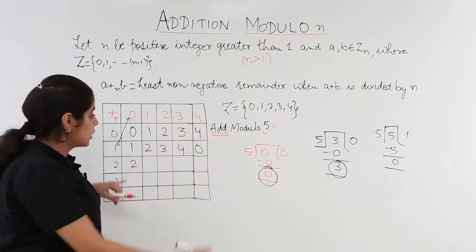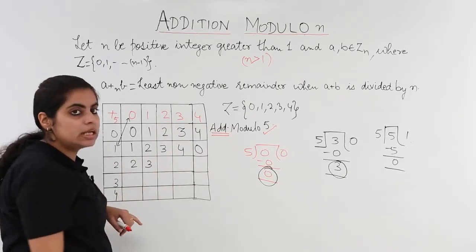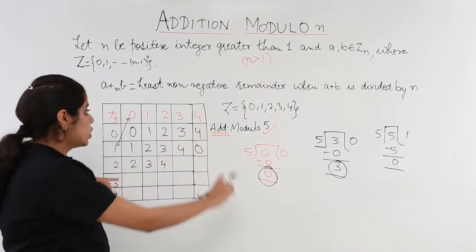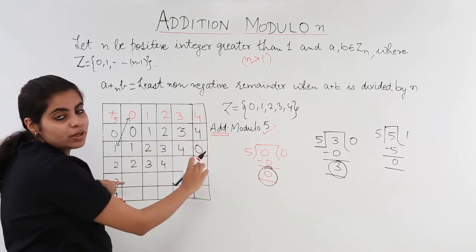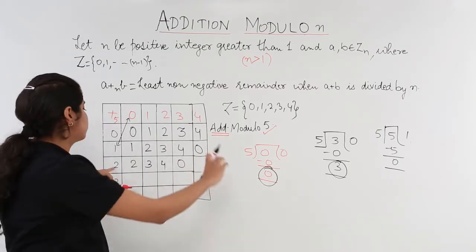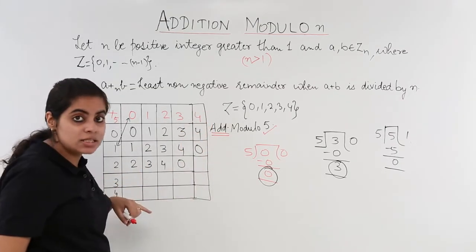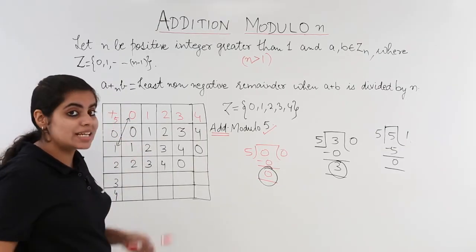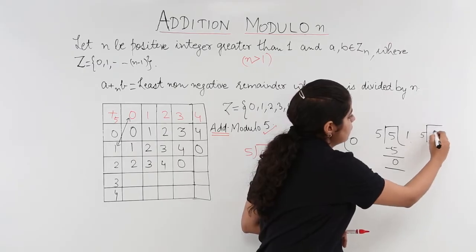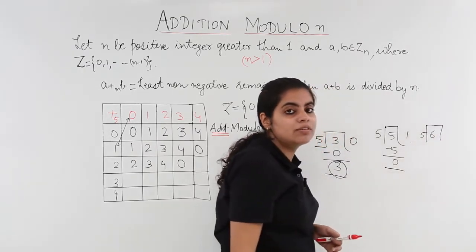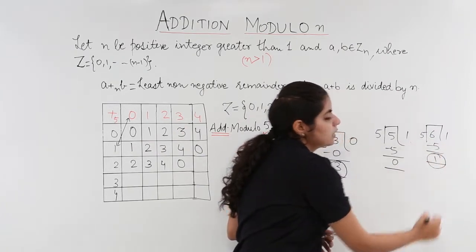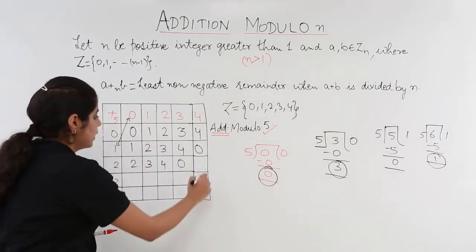2 plus 0 gives remainder 2. 2 plus 1 gives remainder 3. 2 plus 2 gives remainder 4. 2 plus 3 is 5; remainder when 5 is divided by 5 is 0. 2 plus 4 is 6; 6 divided by 5 — there is no 6 in the table of 5 — so the remainder is 1. We write 1 here.